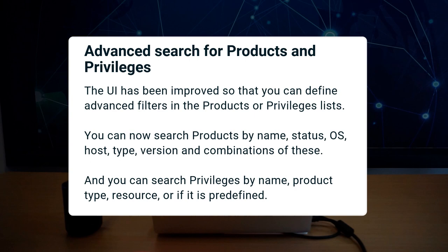The user interface has been improved so that you can define advanced filters in the product or privileges lists. You can now search products by name, status, OS, host, type, version, and combinations of these.